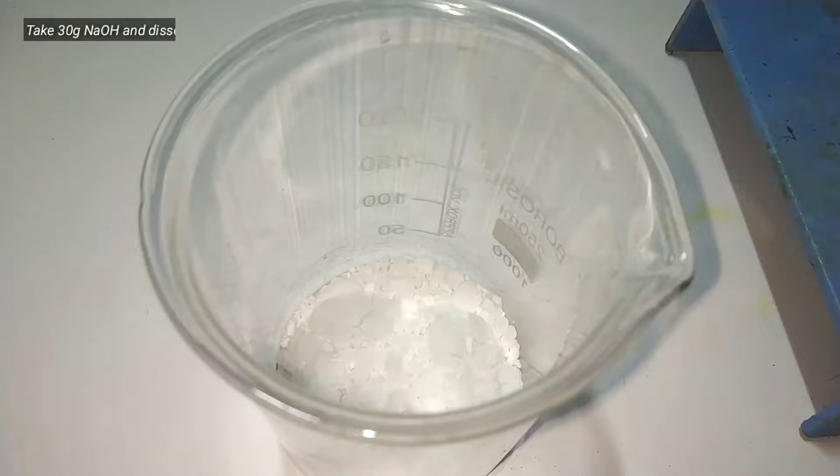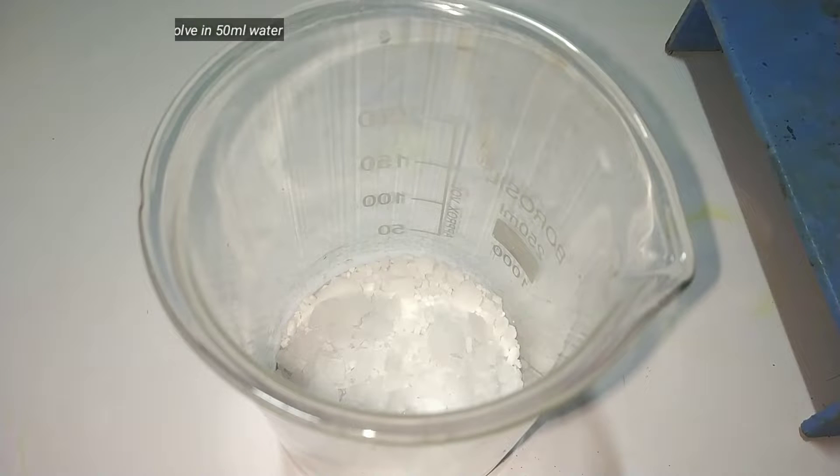While it is being refluxed, we prepare a sodium hydroxide solution by dissolving 30 grams of sodium hydroxide in 50 ml distilled water.